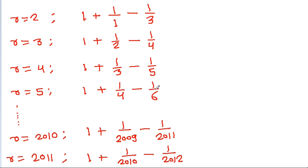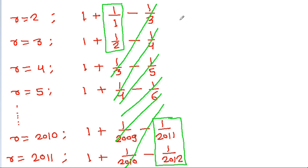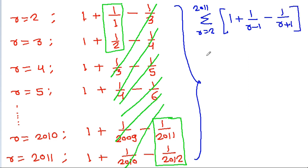If we add all terms, then 1/3 will get cancelled, 1/4 will get cancelled, and only 2 terms will be left at the end. The summation from r=2 to 2011 of (1 plus 1/(r-1) minus 1/(r+1)) gives telescoping cancellations.